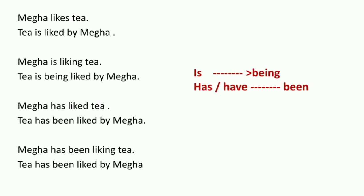Next sentence: 'Mega is liking tea' — this is present continuous tense. Here a helping verb 'is' is already present. When 'is,' 'are,' 'was,' or 'were' is already there, add 'being' as the extra helping verb. When 'has,' 'have,' or 'had' is already there, add 'been.' So the passive becomes: 'Tea is being liked by Mega.' Subject-object changed, 'being' added, tense kept same, third form 'liked' used.